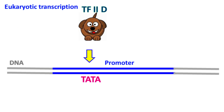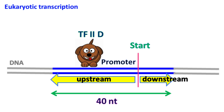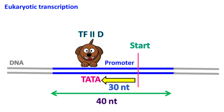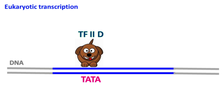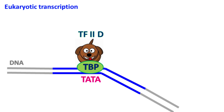Let's see the function of each. In the first step of initiation of transcription, the transcription factor TF2D binds the TATA element in the promoter. The eukaryotic promoter is about 40 nucleotides long, located upstream and downstream of the transcription start site. About 30 nucleotides upstream to the start site, there is an AT-rich sequence known as the TATA box or TATA element. TF2D has a protein called TBP, which is also known as TATA binding protein, that binds the TATA sequence.